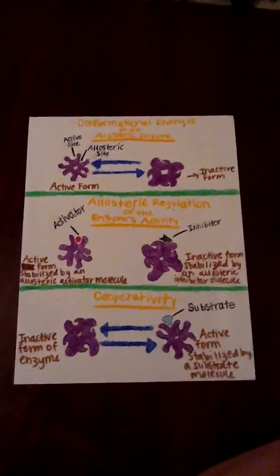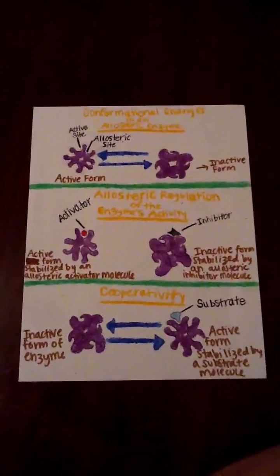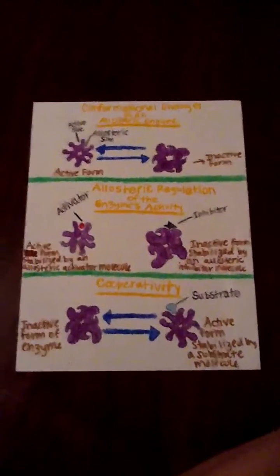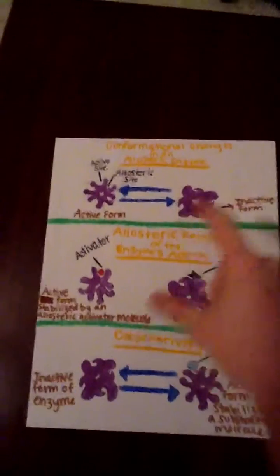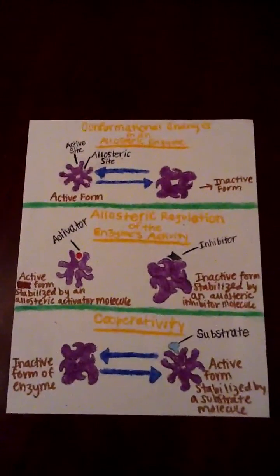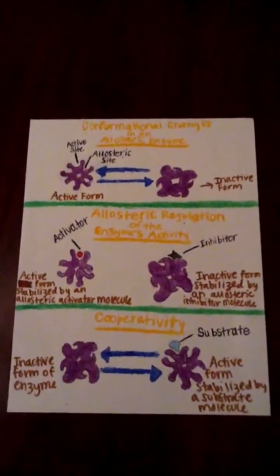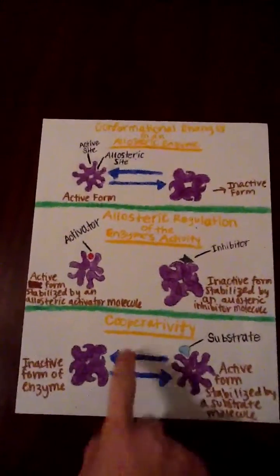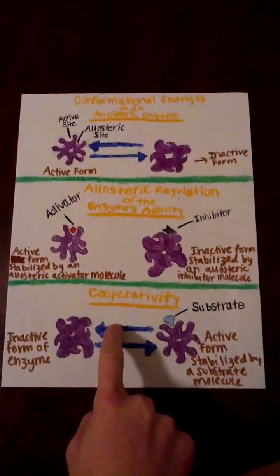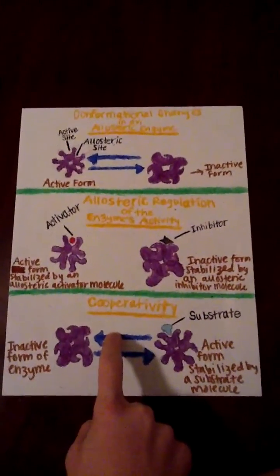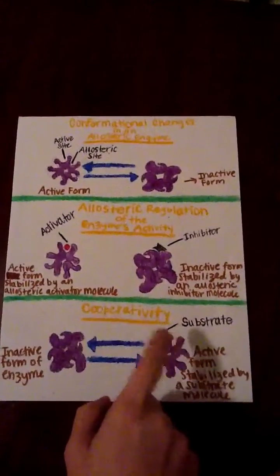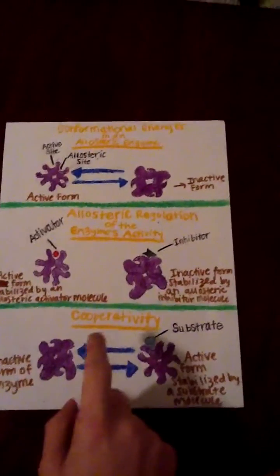These three different pictures summarize two different things: the first two being allosteric regulation of enzyme activity, and the third one being cooperativity. Just to go over a little bit of what everything is in the picture.